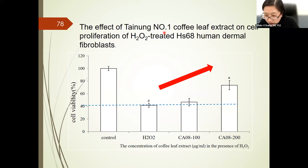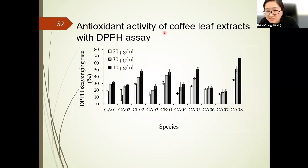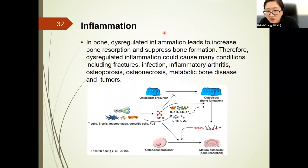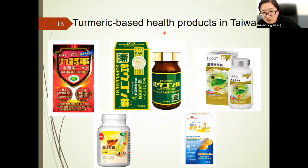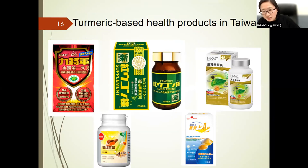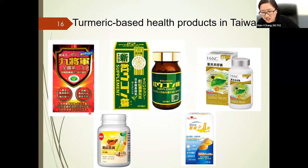In Taiwan, curcumin-based healthy products are really popular, especially hepato-protective ones. People in Taiwan and Japan believe that curcumin-based healthy products can refresh and reduce alcohol levels in the blood. So a lot of people are doing curcumin extraction research at this moment.